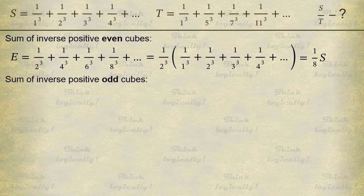Now we can find the sum of inverse odd cubes, denoted with letter O for odd. To do that, we subtract E from S. Substituting the expression for E gives value 7 eighth times S for O.